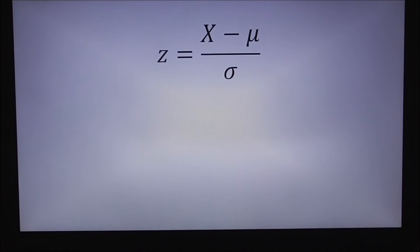In order to calculate the percentile, we need to take advantage of the equation for a z-score. That is, z is equal to x minus mu over sigma, where mu represents the population mean, sigma represents the population standard deviation, and x is the particular value for which you're trying to calculate a z-score.